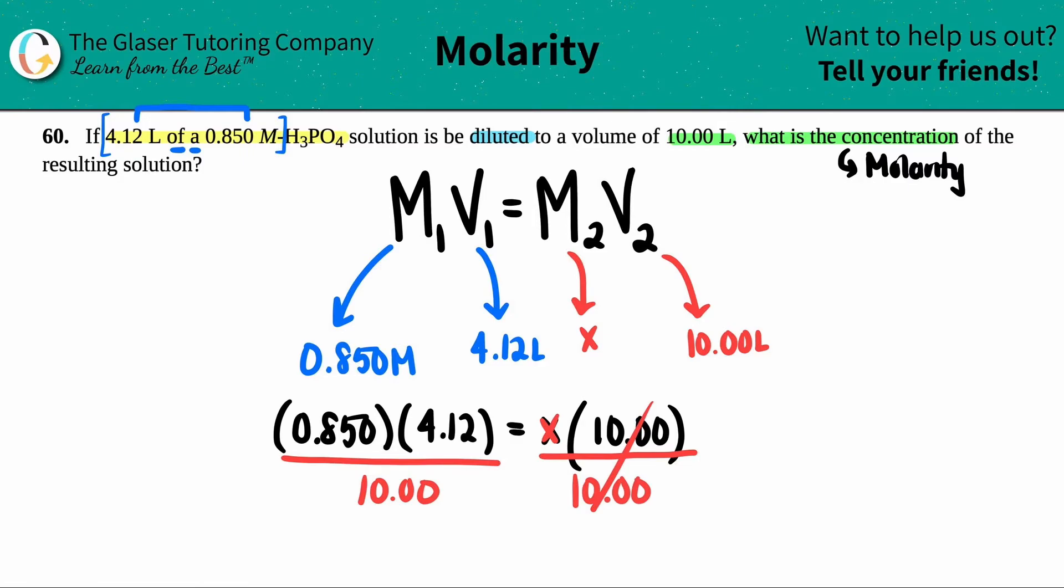And there you go. Let's see what we get. X equals 0.85 times 4.12 and then divide it by 10.